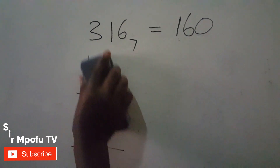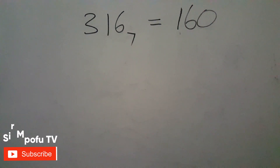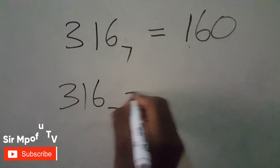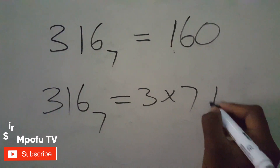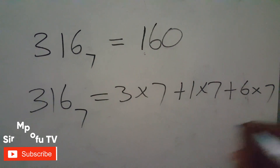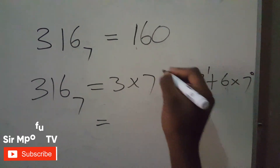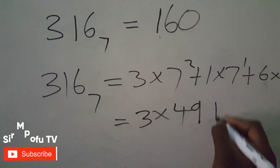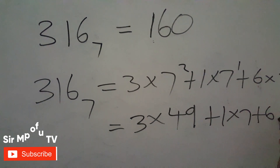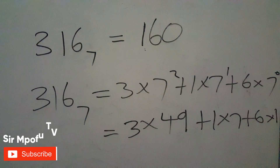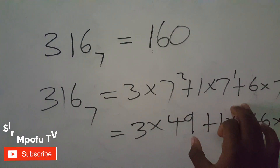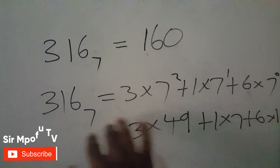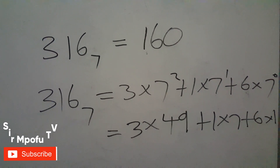Now I'm going to prove you still get the same answer using the expansion method. For the expansion method you write three times seven squared, plus one times seven to the power one, plus six times seven to the power zero. Seven squared is 49, so this becomes three times 49, plus one times seven, plus six times one. If you don't understand this expansion method, comment down and I'll record another video showing how we do it.